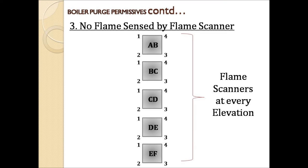The third boiler purge permissive is no flame should be sensed by a flame scanner. The picture in this slide shows the location of flame scanners situated at every corner and at every elevation of the boiler. This graphical representation is typically for a 270 megawatt plant or 890 TPH boiler. There may be more elevations for a 600 megawatt plant. If any one of these flame scanners senses flame in the boiler, then we will not get the permissive for boiler purging.